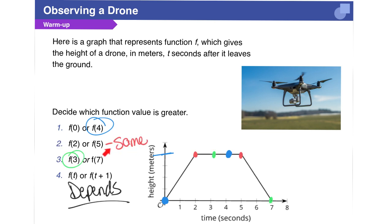I've color-coded numbers 2 and 3. In number 2, f of 2 and f of 5 are at the same height. And in number 3, f of 3 is going to be higher than f of 7.